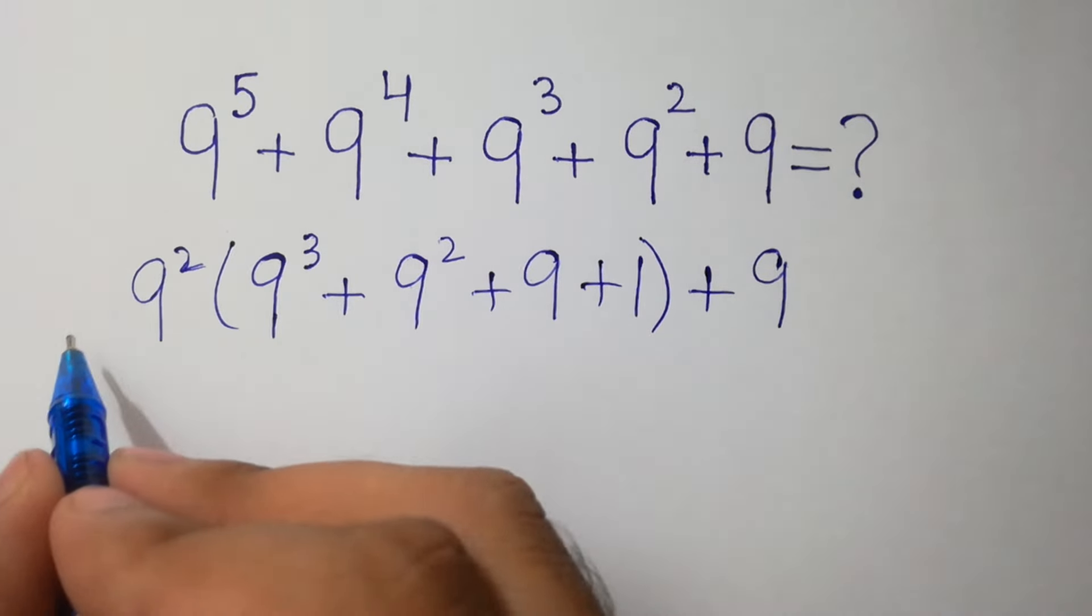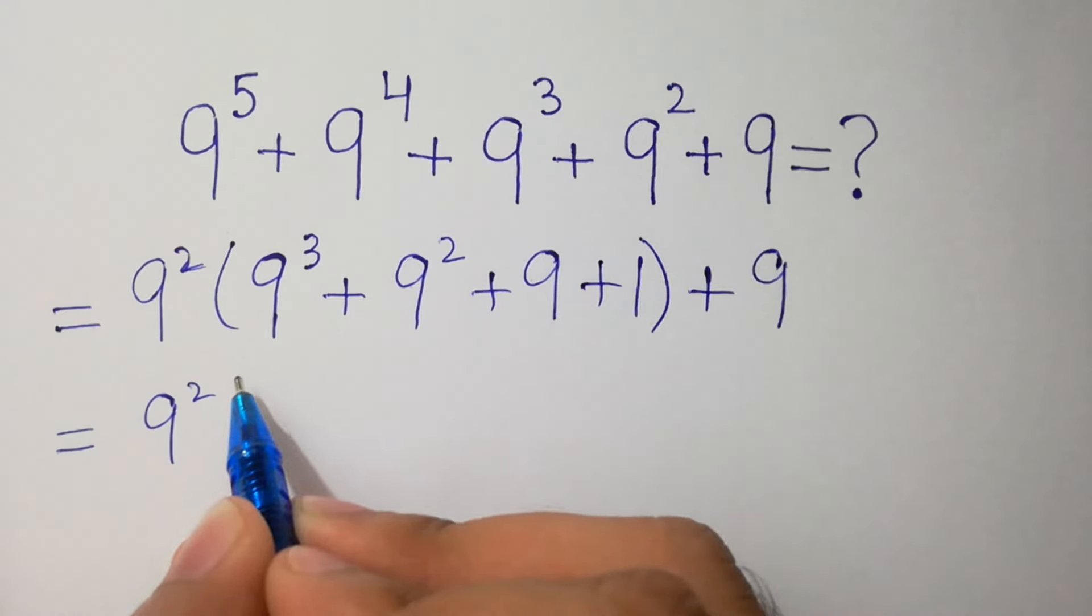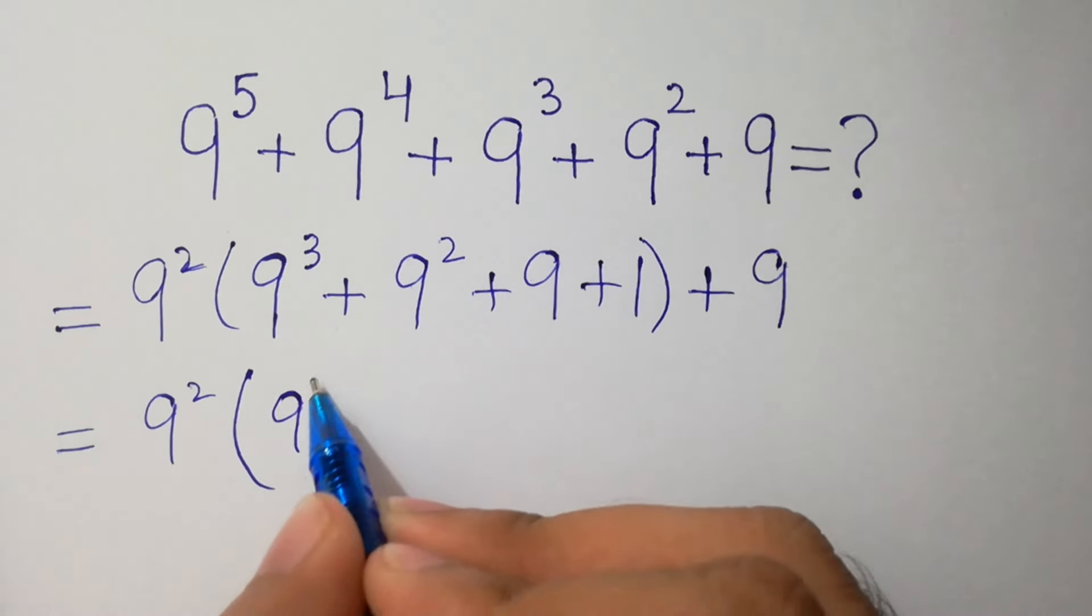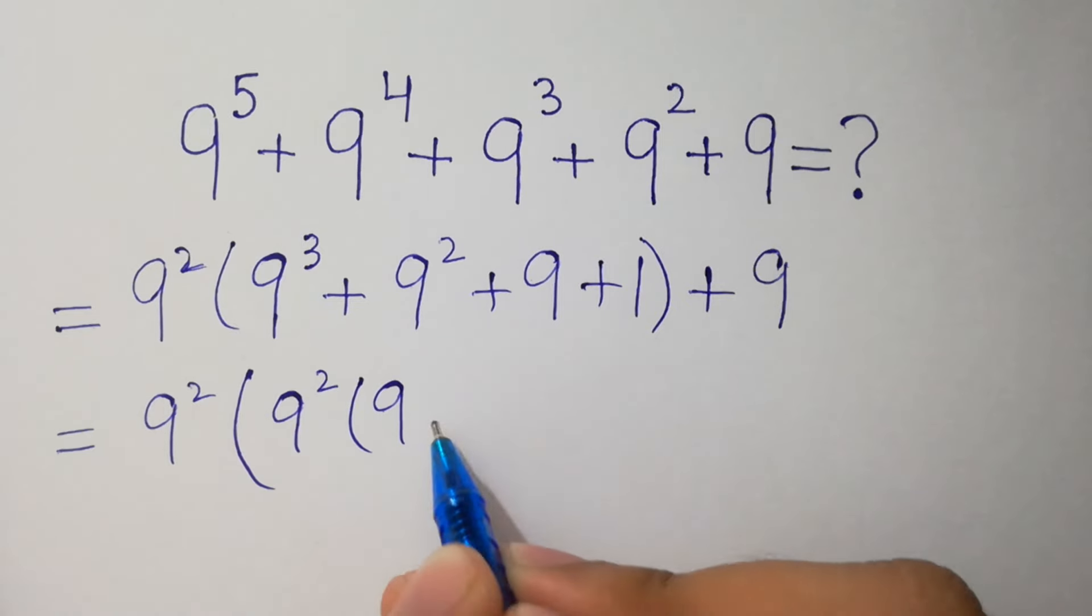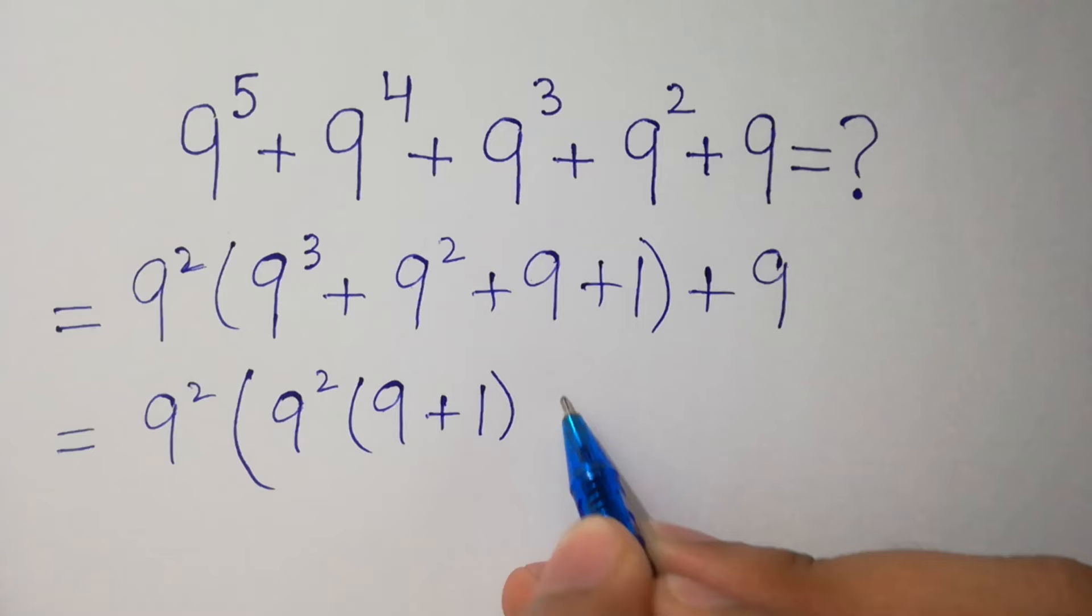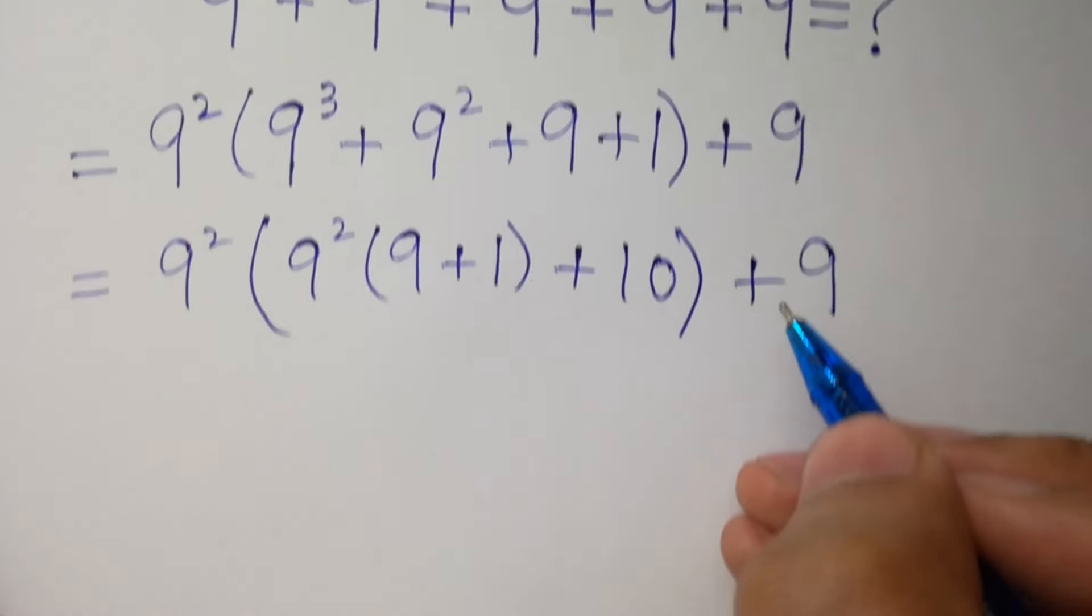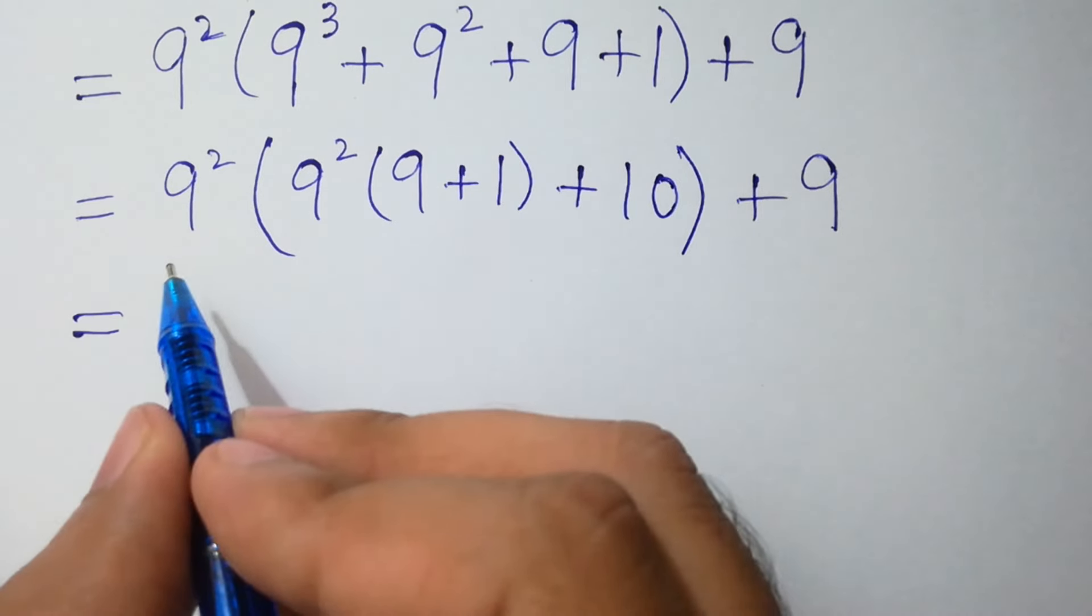Second step, we can again factor out 9 squared. We have 9 squared times open bracket, 9 squared times open bracket 9 plus 1, close bracket, plus 9 plus 1 which equals 10, close bracket, plus 9. Next, 9 squared equals 81.